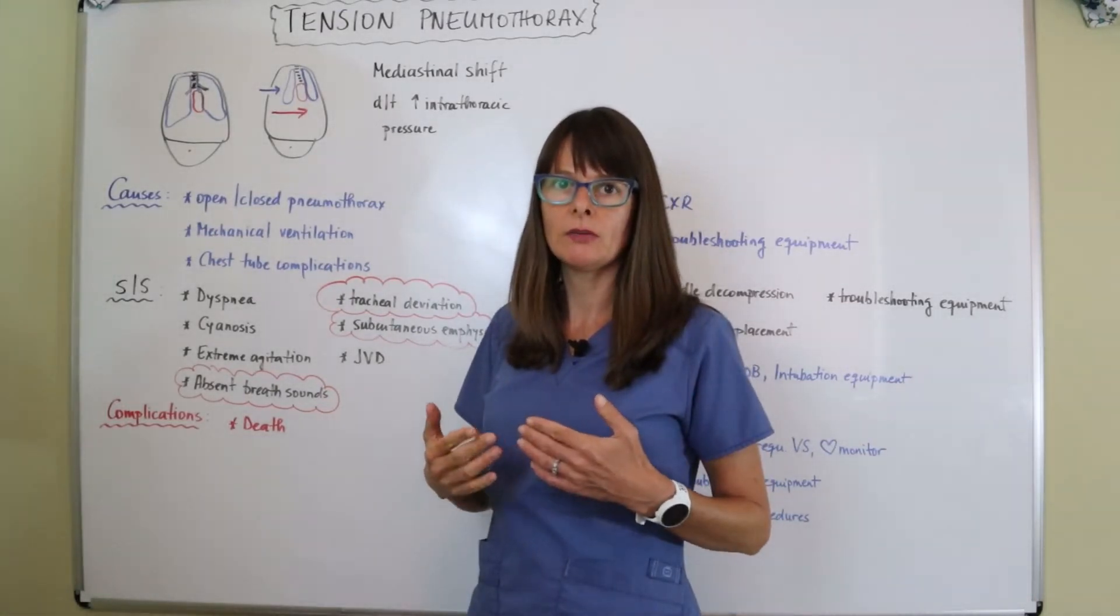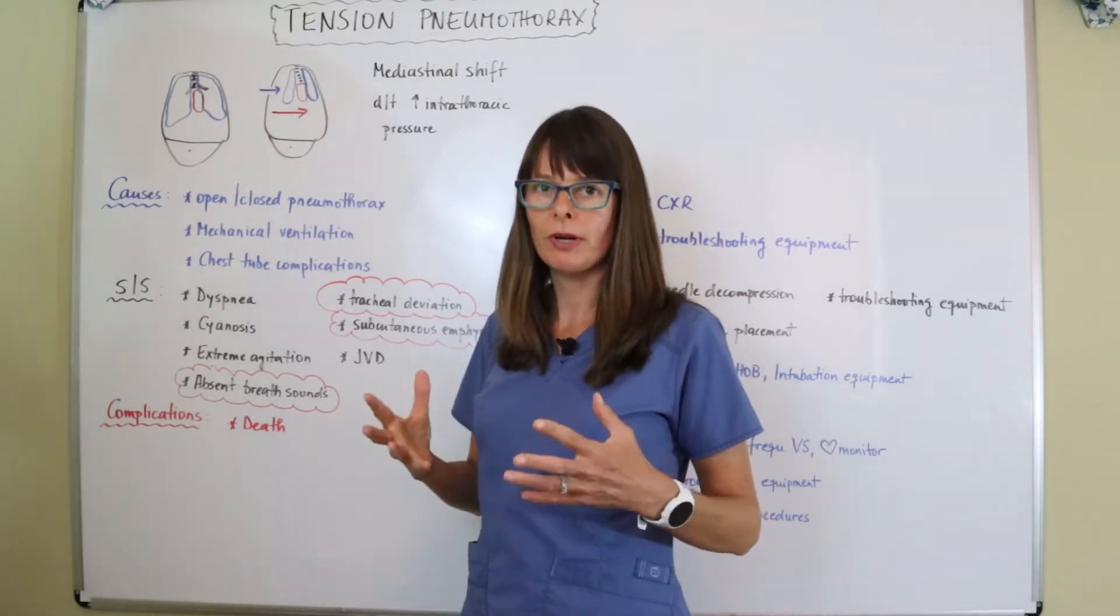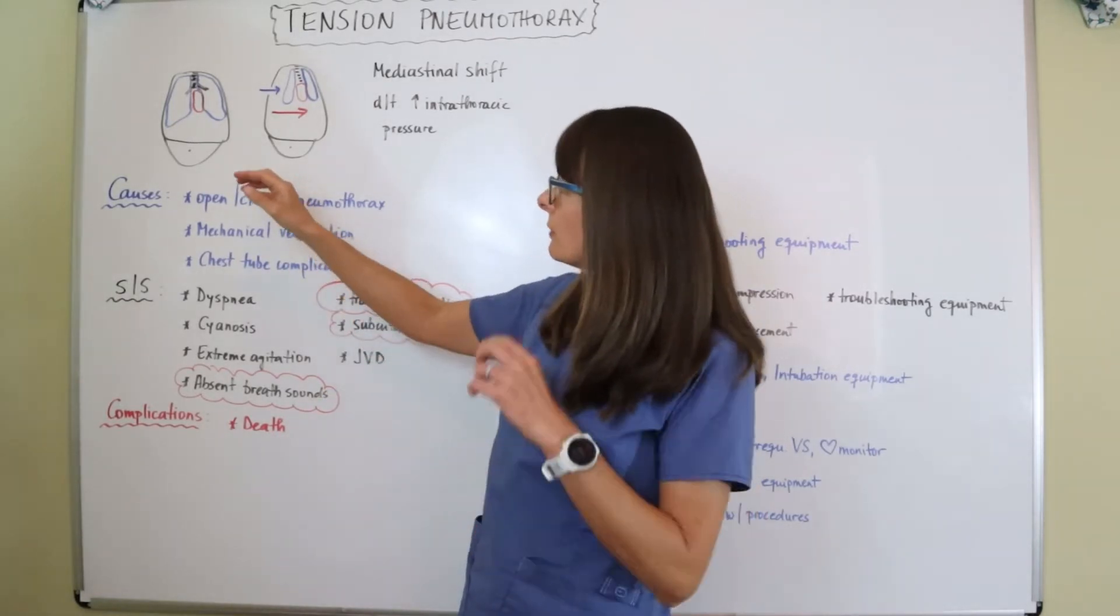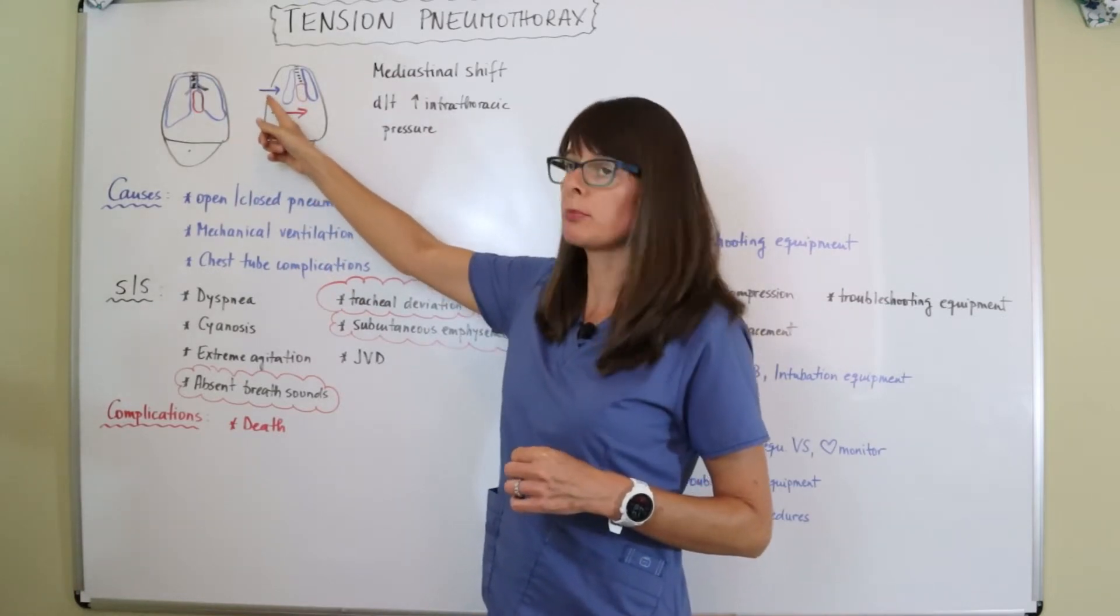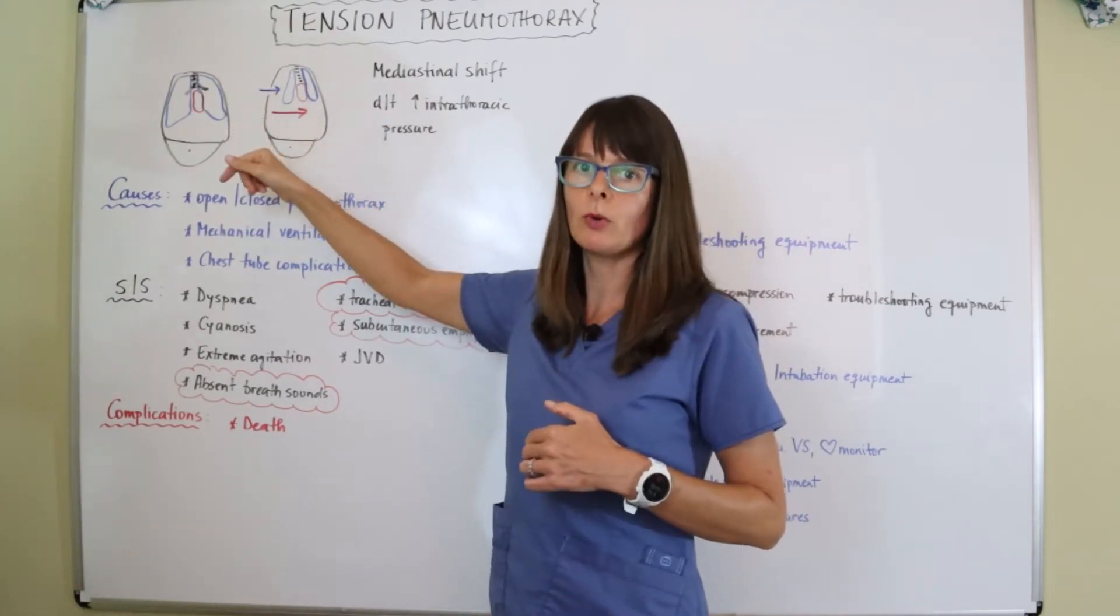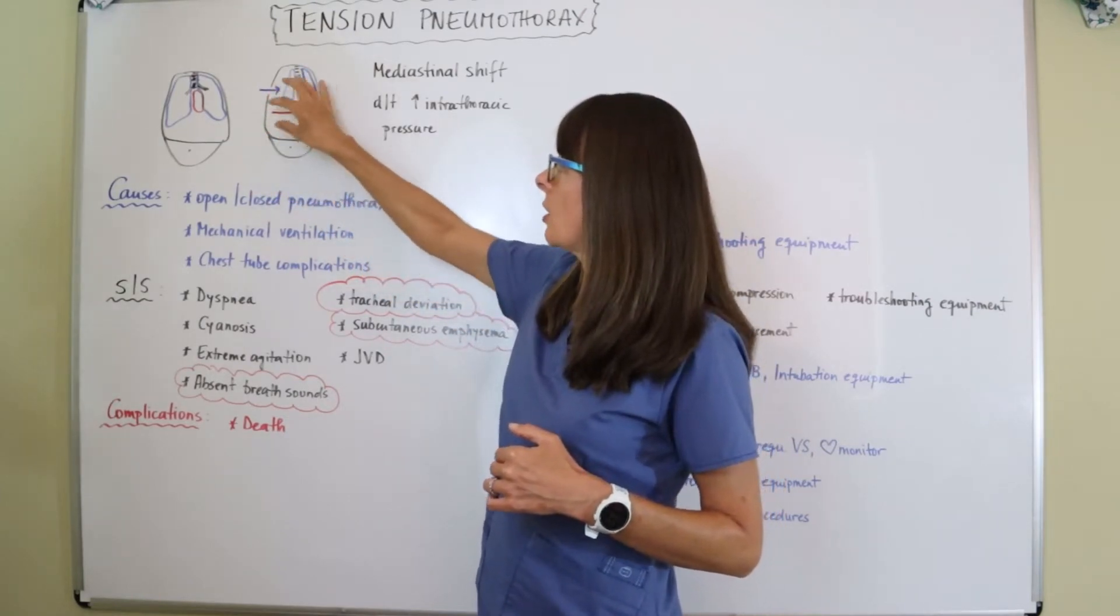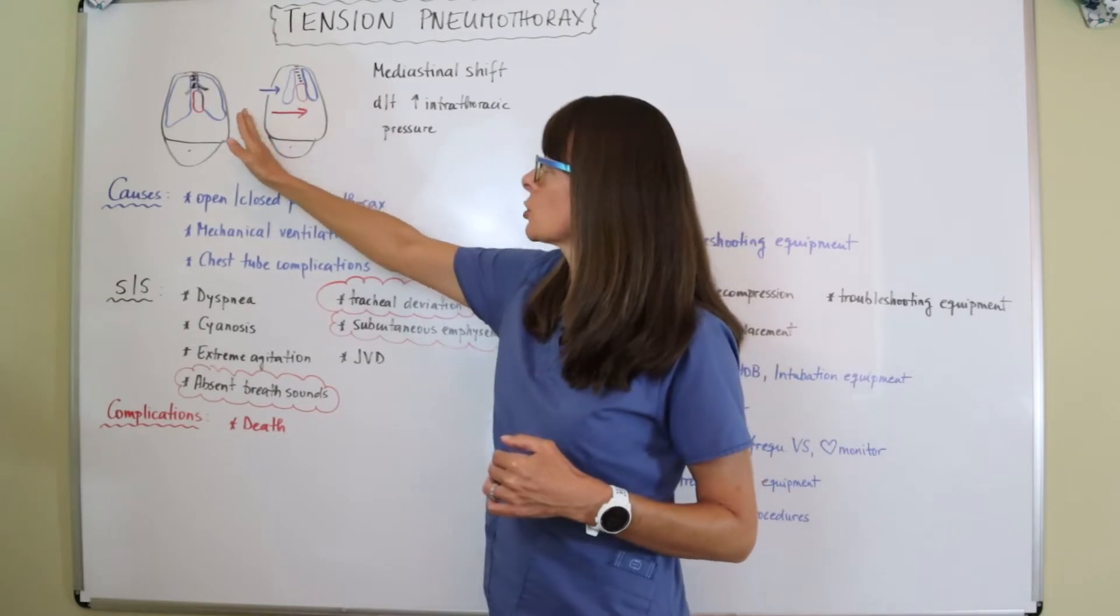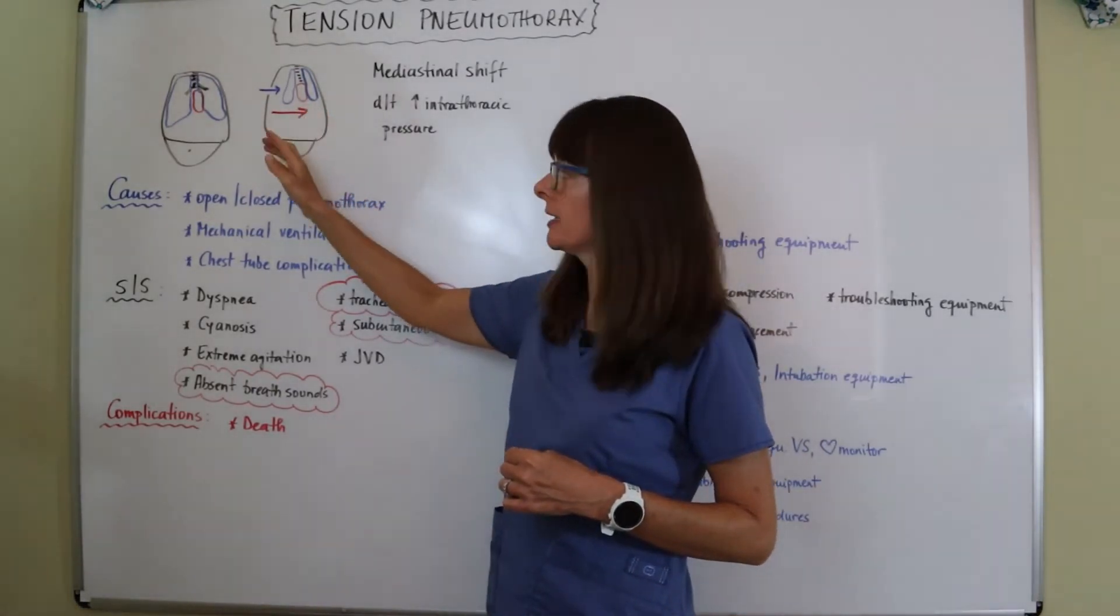Now in a tension pneumothorax, as the name already implies, there is some tension in the chest and the lung is collapsed for whatever reason. So now if there was penetrating trauma, air enters the pleural space for whatever reason, and we'll look at those here in a moment.